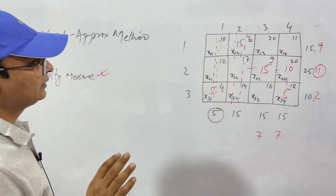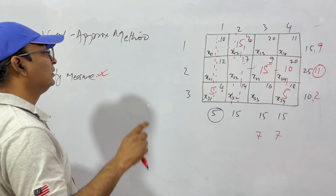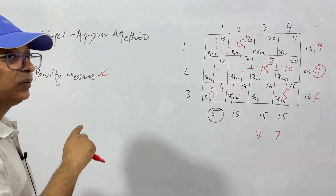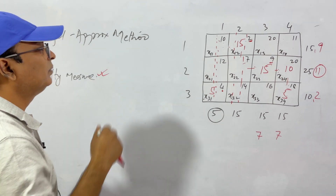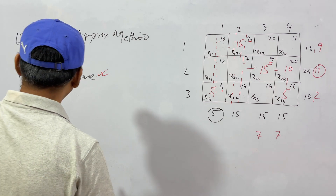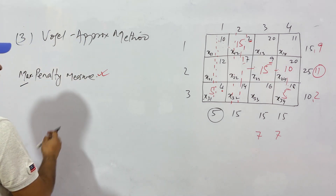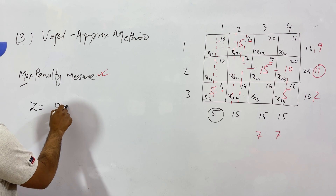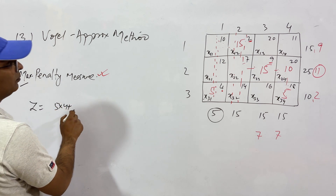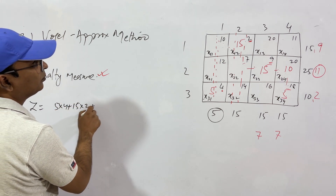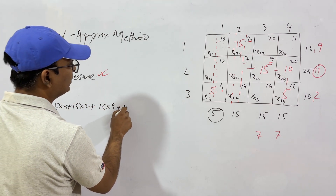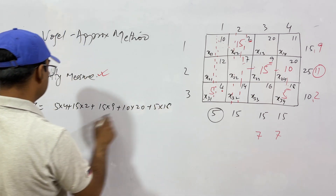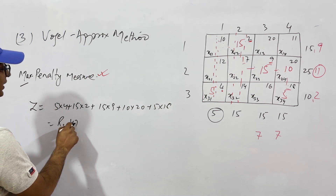Coincidentally, this result is the same as what we got in the least cost method. The cost is: 5×4 + 15×2 + 15×9 + 10×20 + 5×18 = rupees 475. Many times the two methods will coincide.